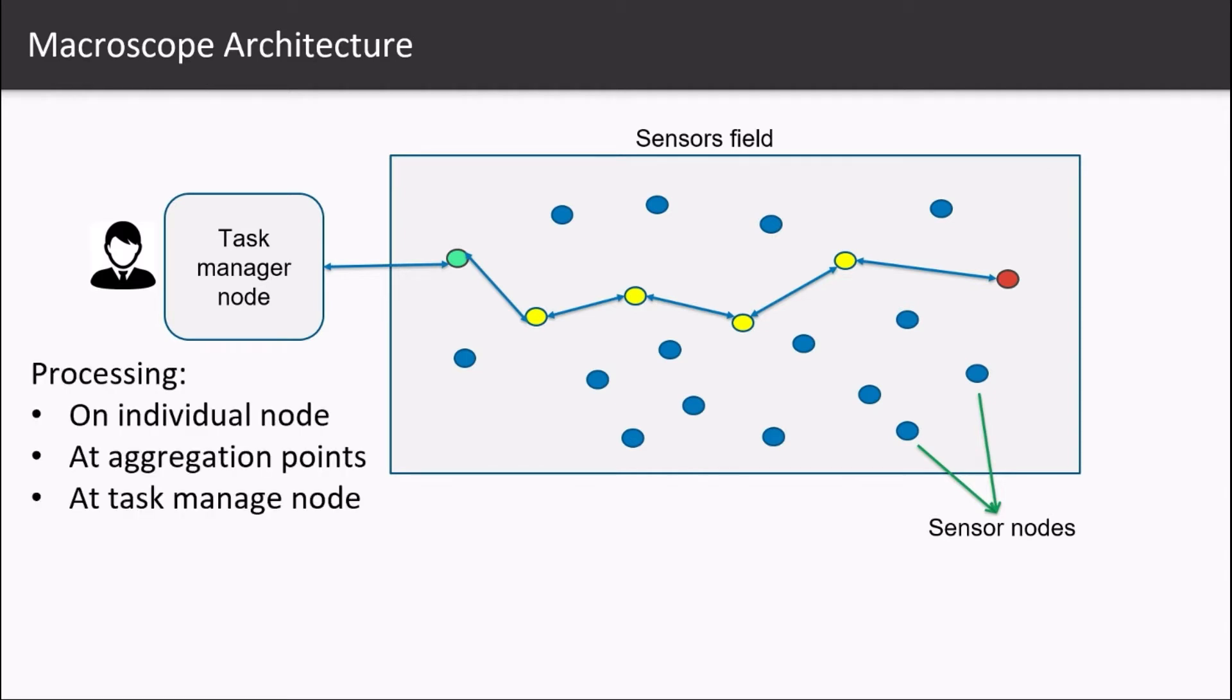The processing can be done either on individual nodes independently or it can be done at aggregation points on the intermediate nodes as well or all the processing can also be handled and managed at the task manager nodes.